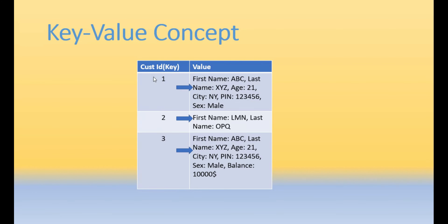For example, we have a customer ID as a key — customer ID 1 — and the value has first name, last name, pin code, and city. For customer ID 2, you have first name and last name, but note that you need not have all the same columns. For customer ID 3 there are different options, and there may be additional fields. Each value can be different — that is the main concept here.